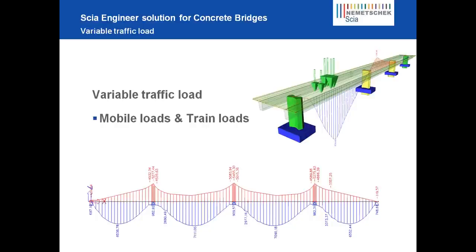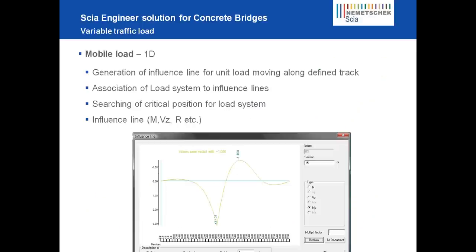The first part is about variable traffic loads, covering mobile loads and train loads. Mobile loads and train loads are two different things in SIA. Mobile loads are for 1D members and generate influence lines for a unit load that moves over a certain track. By using that influence line, you can find the most negative position for the mobile loads, and then generate the load at that critical position.